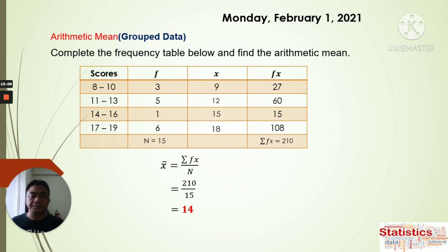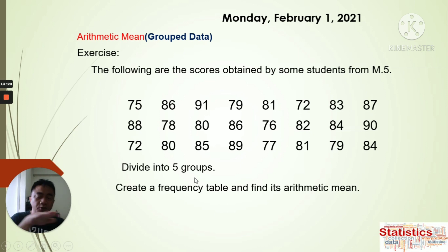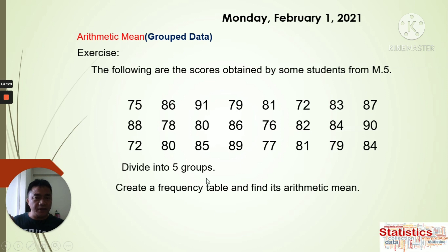Here is the exercise: given the scores obtained by some Math 5 students, divide the data into five groups or five classes, create a frequency table, and find the arithmetic mean. Find the range first, then divide by the number of groups to get the class interval, then complete the frequency table.